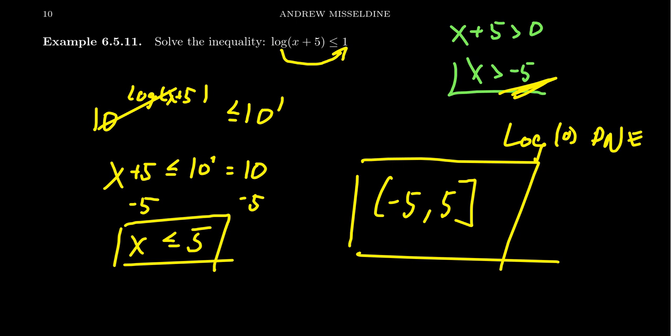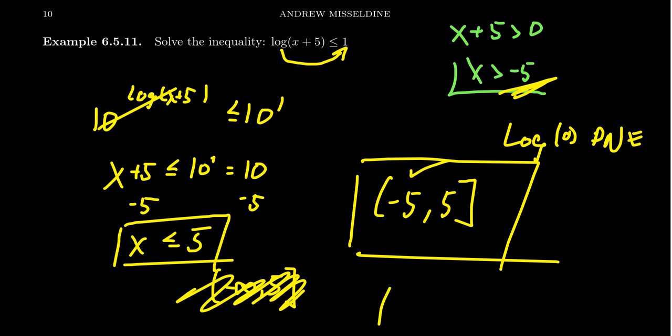Solving inequalities with logarithms is basically the same as solving inequalities with exponentials. You have to pay attention to your base — is it a growth model (increasing) or a decay model (decreasing)? If you're careful about that, you'll be fine. But with logarithms, you have the extra stipulation of checking the domain. If you didn't look at the domain, you might think everything less than or equal to five is okay and give the solution as negative infinity to five — but that's wrong because we can't include anything less than negative five.